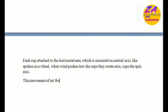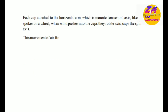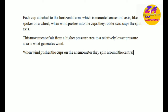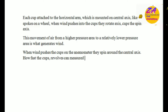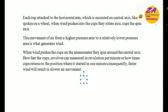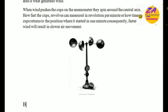When wind pushes into the cups they rotate around the spin axis. This movement of air from a higher pressure area to a relatively lower pressure area is what generates wind. When wind pushes the cups on the anemometer, they spin around the central axis. How fast the cups revolve can be measured in revolutions per minute, or how many times the cup returns to the position where it started in one minute. Faster wind will result in faster movement.